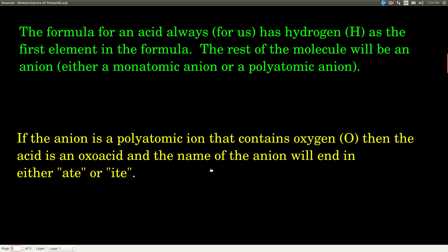In an acid, the rest of the molecule after the hydrogen will be an anion and it can be either a monatomic anion or a polyatomic anion. If the anion is a polyatomic anion and it's one of those that contains oxygen, then it is what we call an oxoacid. Get it, oxo for oxygen.